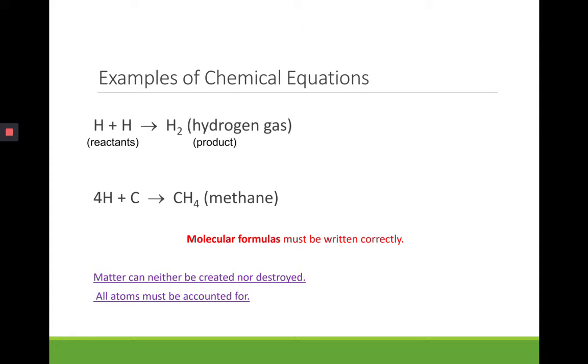So here are some examples of chemical equations. We see that if we add two hydrogens together, we can get hydrogen gas. The reactants are the two separate hydrogen atoms, and the product is the hydrogen gas on the right.